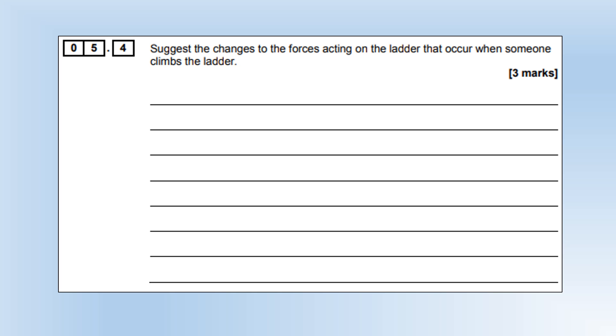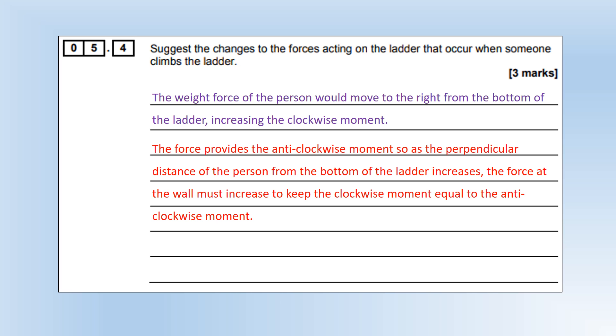Suggest changes to the forces acting on the ladder that occur when somebody climbs the ladder. As you climb the ladder, the weight force of the person would move to the right from the bottom of the ladder, which means the clockwise moment is going to increase. That's going to mean the normal contact force at the top of the ladder is going to have to increase to make the moment stay the same. Another thing: the reaction force from the ground would also have to increase upwards to make sure it's in equilibrium, and the frictional force would therefore increase as well.